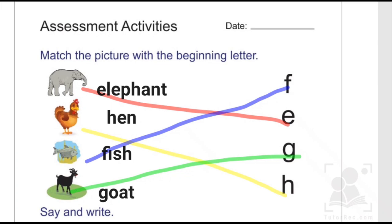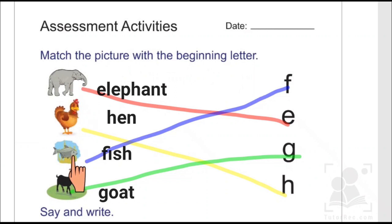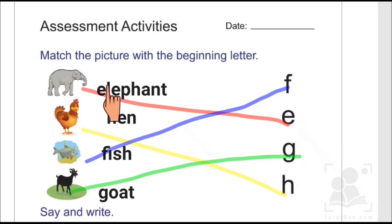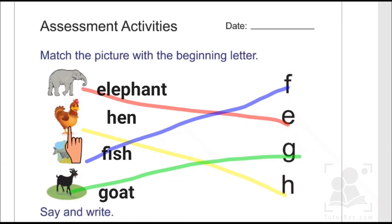I hope you enjoyed today's video. Let's have a quick recap. In today's assessment activity we matched each picture with its respective beginning letter. The first picture is of an elephant and the word 'elephant' starts with the letter E, therefore we matched this picture with its respective letter E. The second picture is of a hen, the word 'hen' spells H-E-N, therefore we matched it with its beginning letter H.